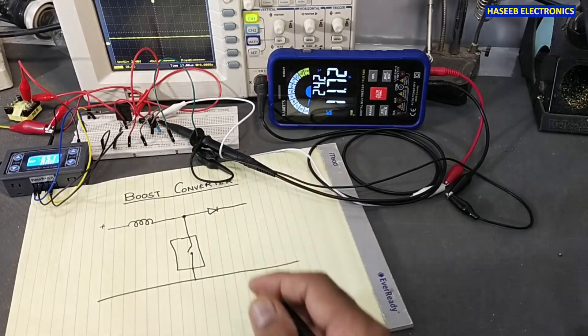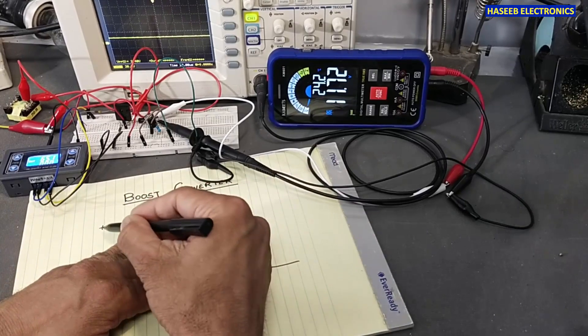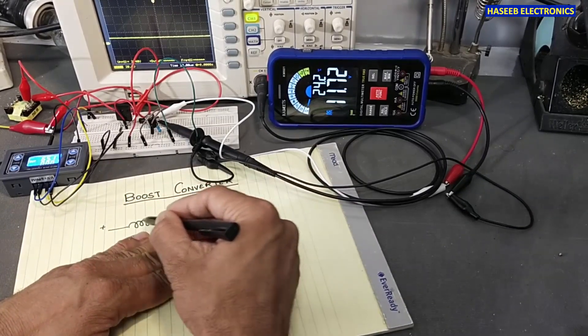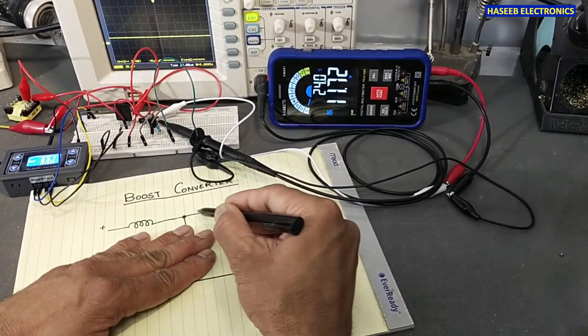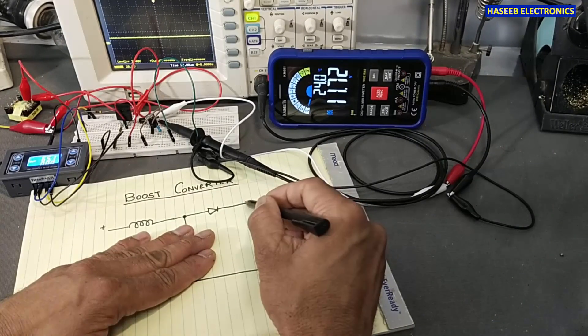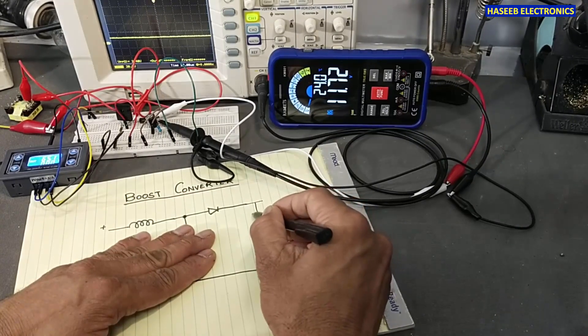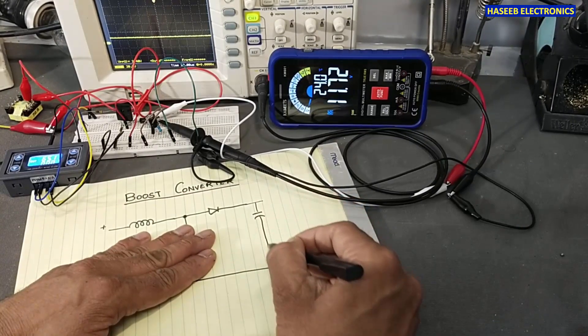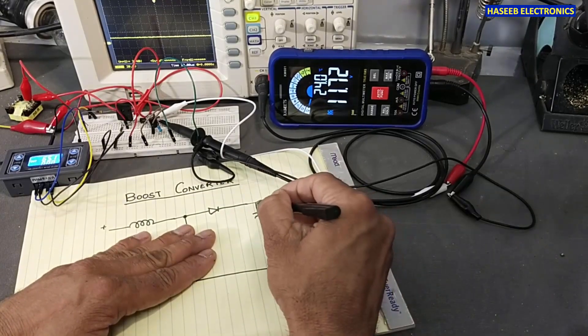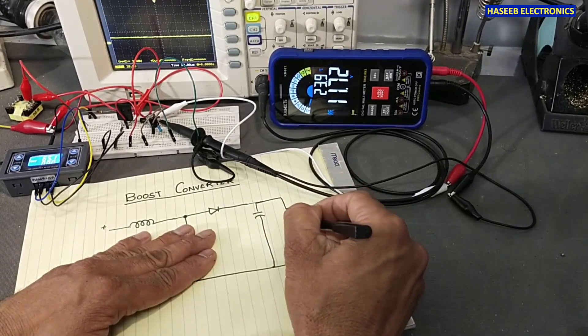And we have one diode connected in series with this coil. When the switch is off, positive voltage will pass through the inductor to the diode, to the capacitor and to the load.